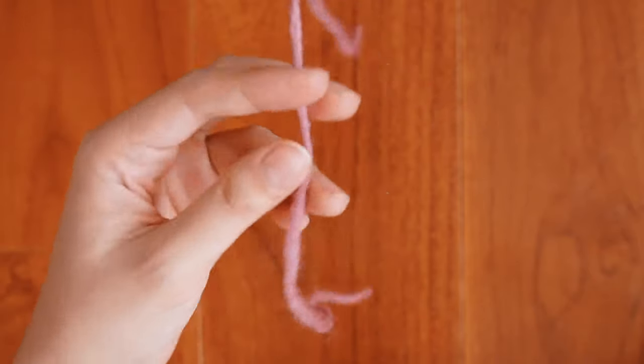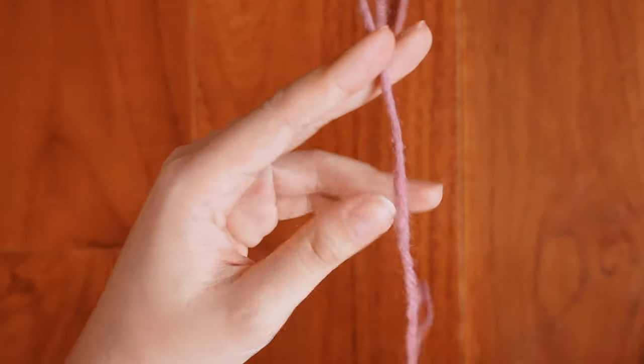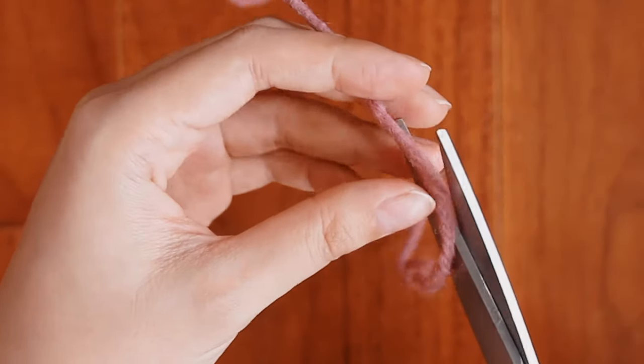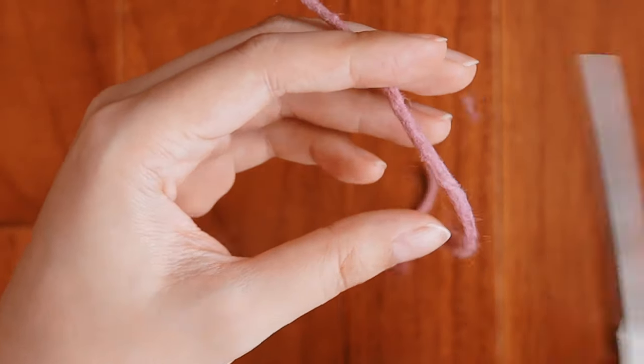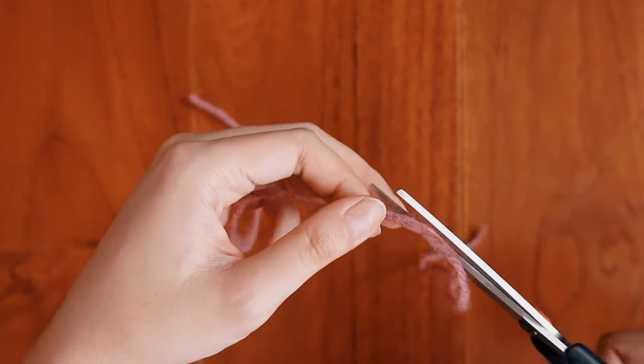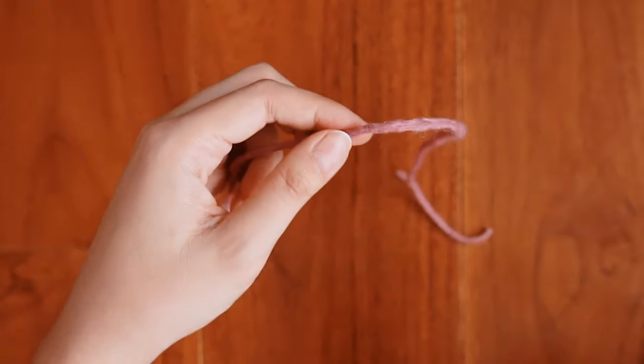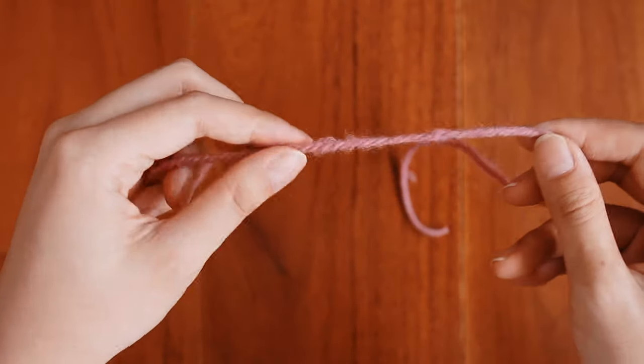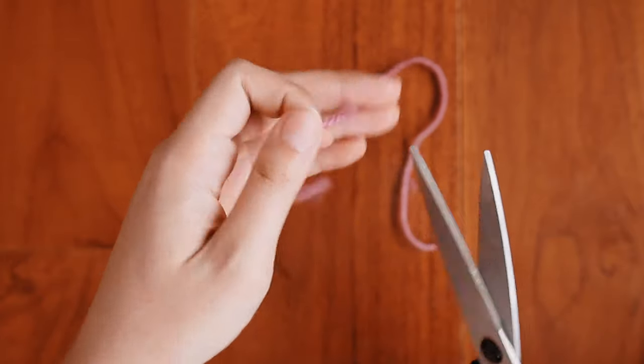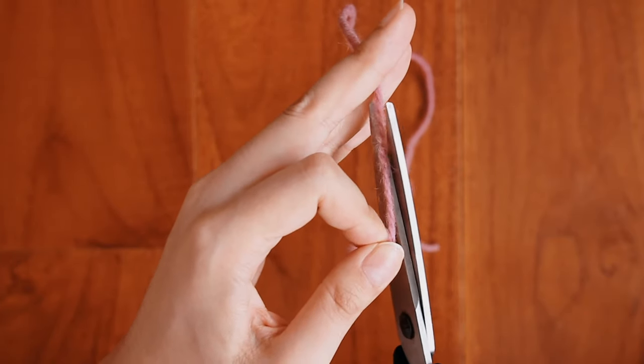If you feel like there are very bumpy areas on your yarn, what you can do is just take a pair of scissors and just lightly kind of trim it off, very lightly. You don't want to snip off your yarn, but you can definitely do that in areas where you feel like it's a little bit furry or a little bit bumpy and not very even. So that is how you joined two strands of yarn with a spit splice.